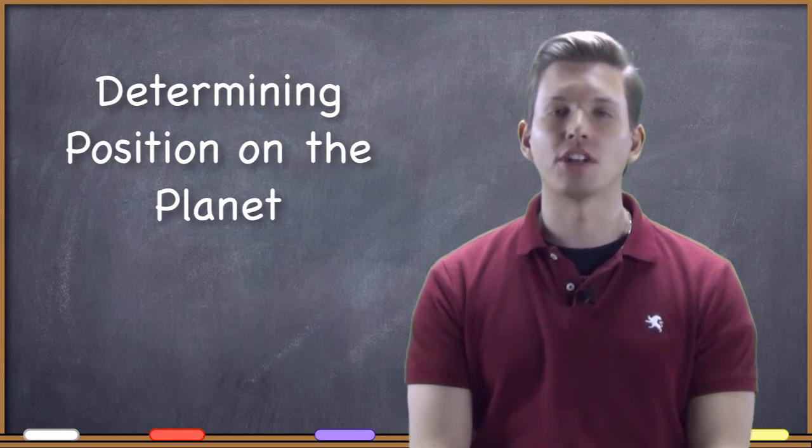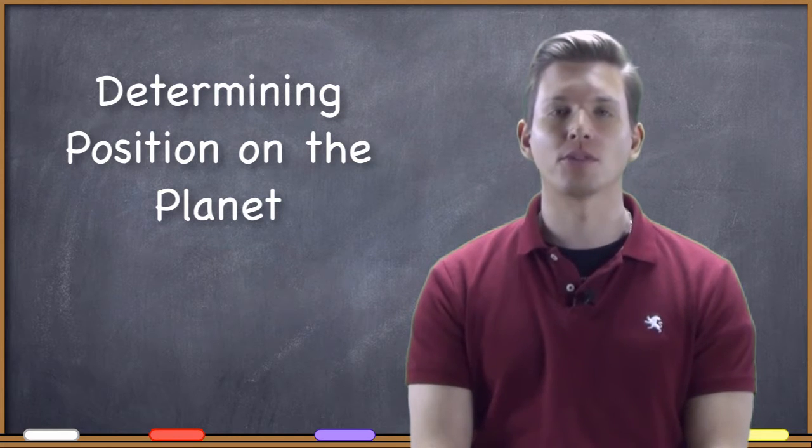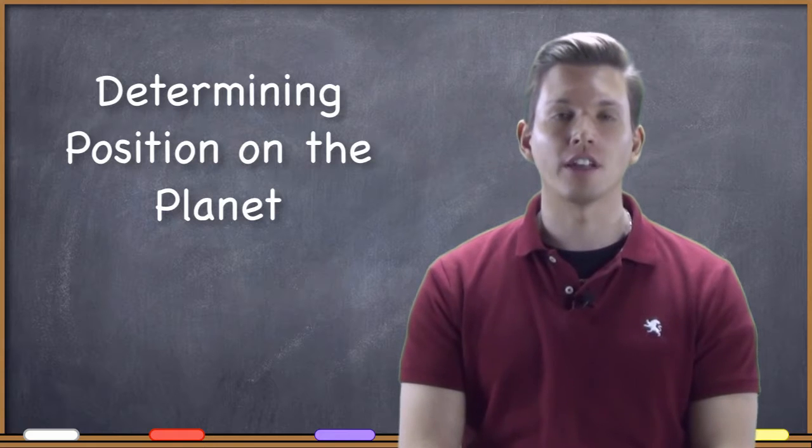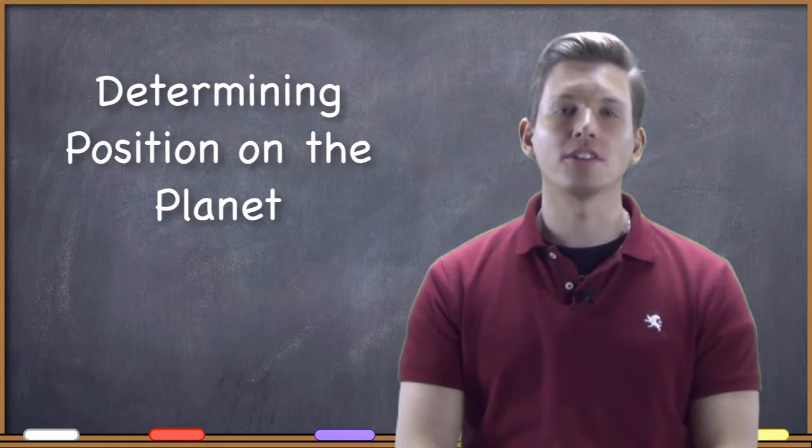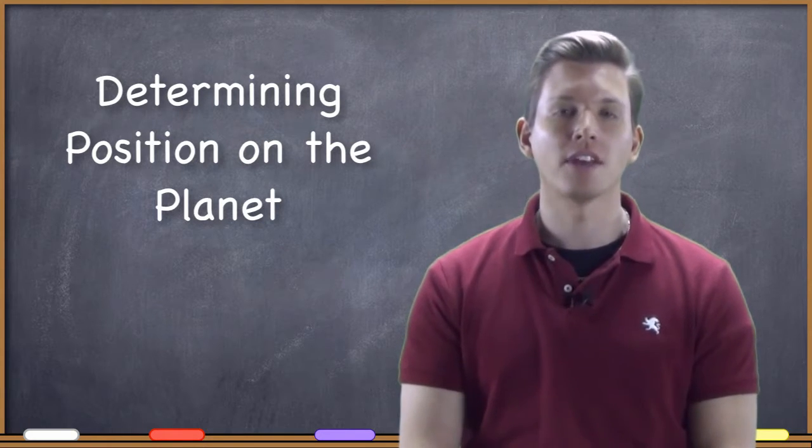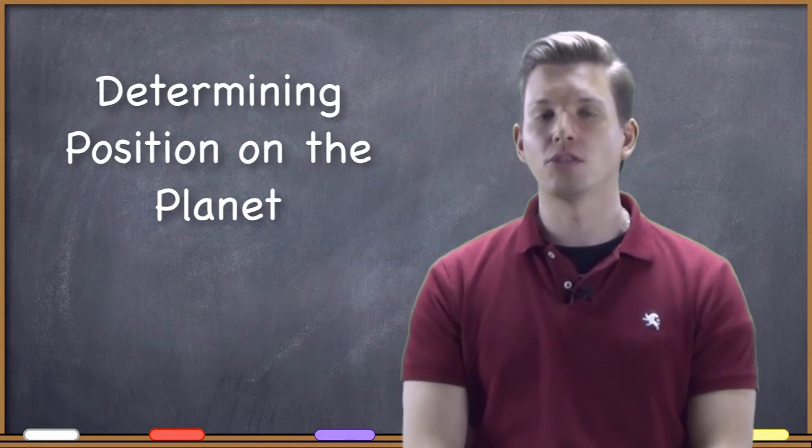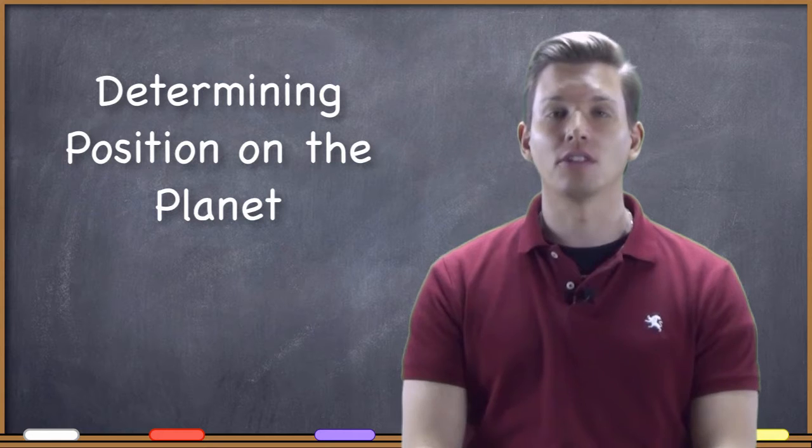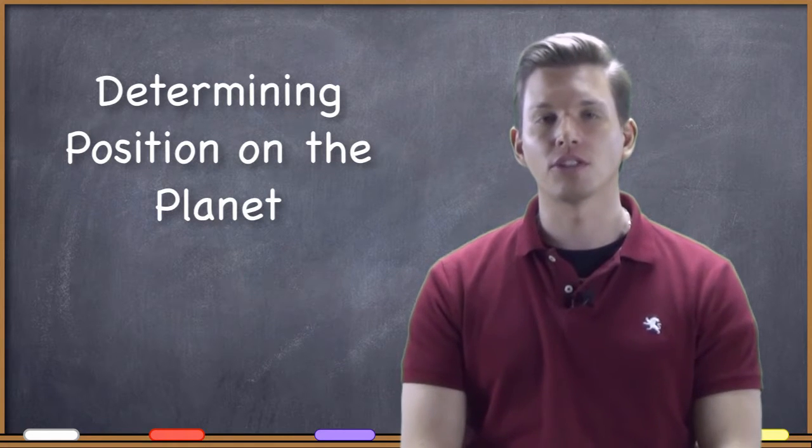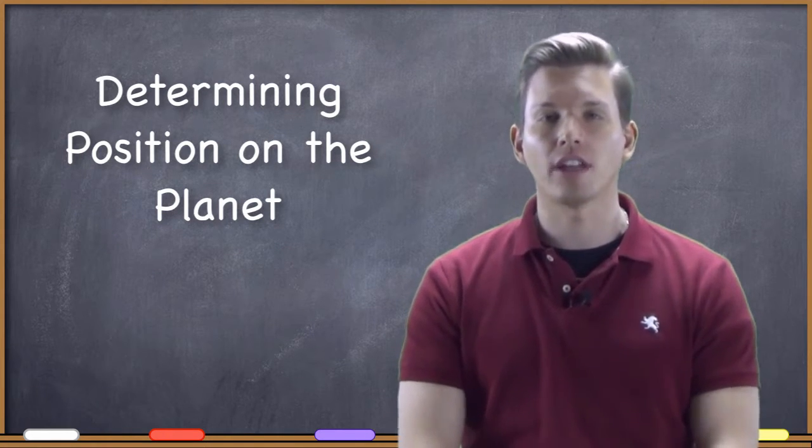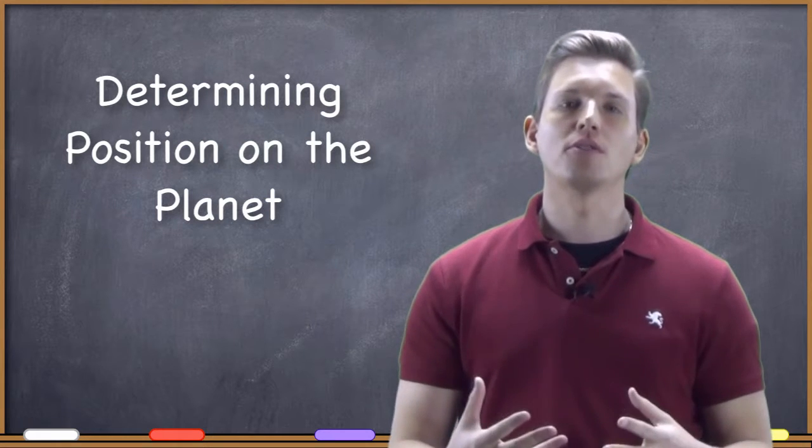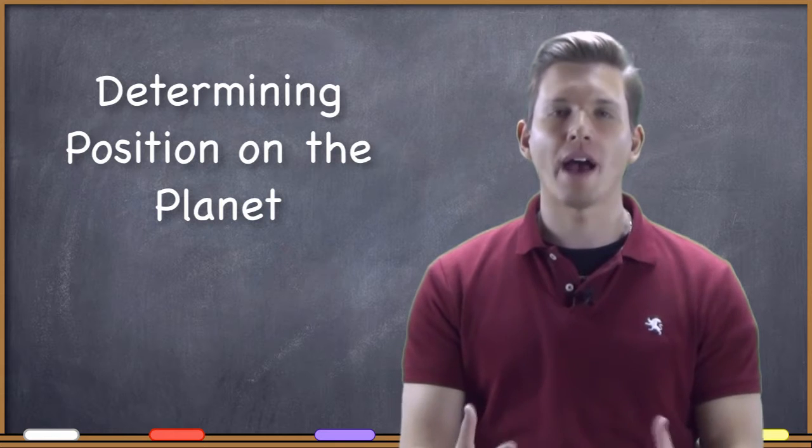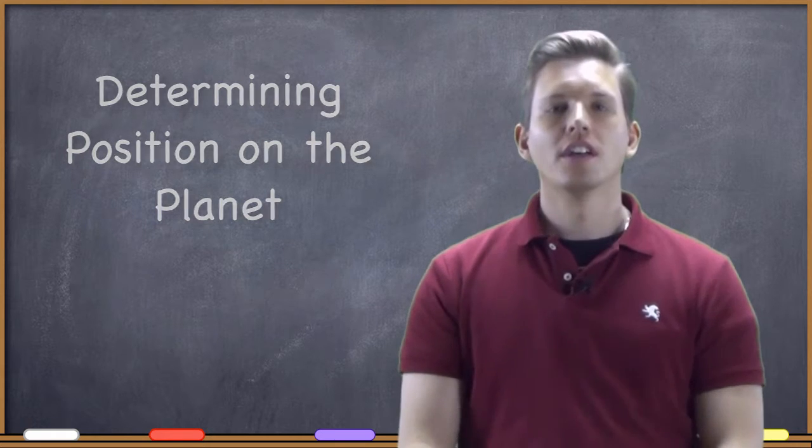Determining position on the planet is essential for cartography to work, for mapping to work, for all of GIS to work, basically all of our geospatial technologies are dependent on our ability to determine a position on the planet and then to communicate that information with somebody else. So the basic system that we use is latitude and longitude for specifying our position, and that's the system we're going to talk about in this lecture. But first, I'm going to conduct a bit of a thought experiment with you about how we go about determining position.